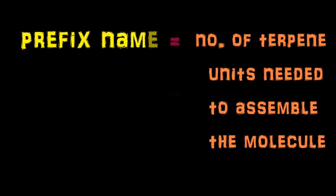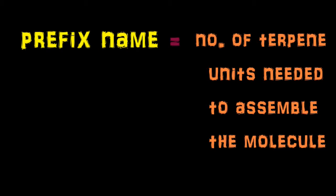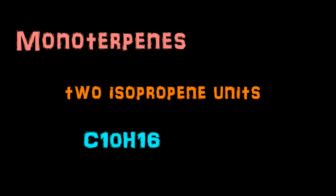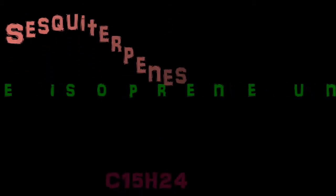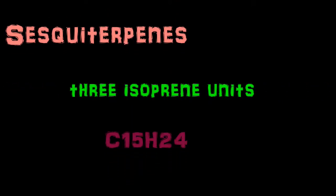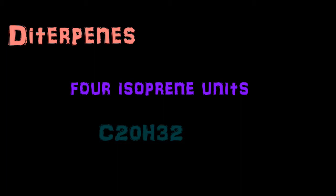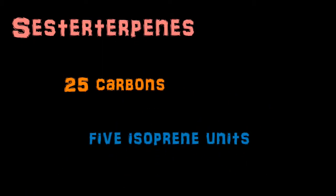A prefix name indicates the number of terpene units needed to assemble the molecule. The first type is hemiterpenes, consisting of a single isoprene unit. Then monoterpenes, consisting of two isoprene units with the molecular formula C10H16. Then sesquiterpenes, consisting of three isoprene units with the molecular formula C15H24. The next is diterpenes, composed of four isoprene units with the molecular formula C20H32. Sesterterpenes have 25 carbons and five isoprene units and are rare.